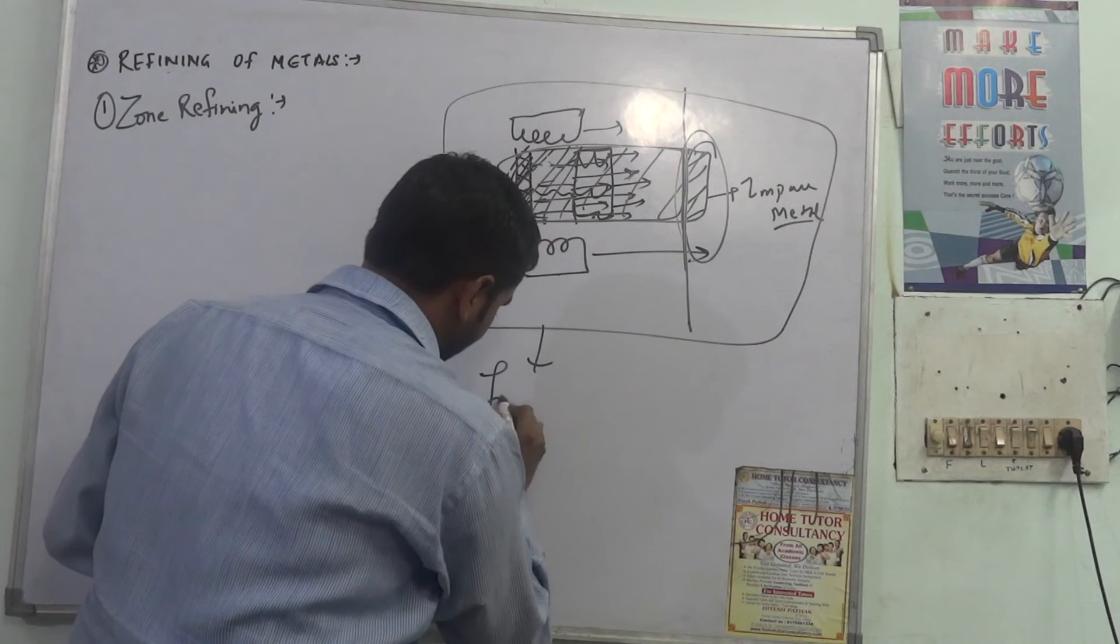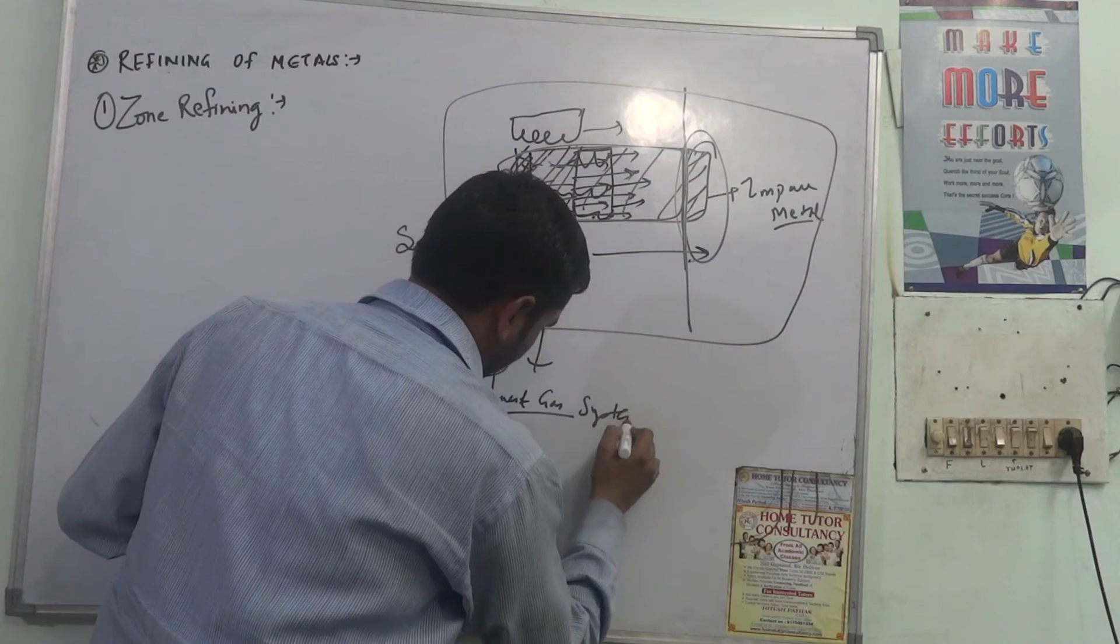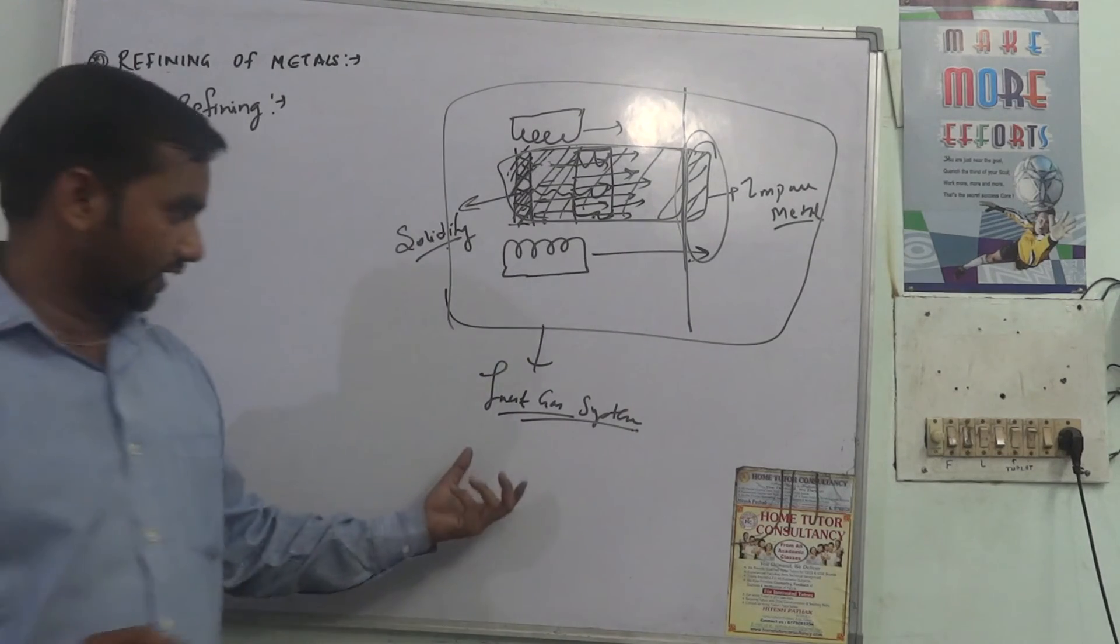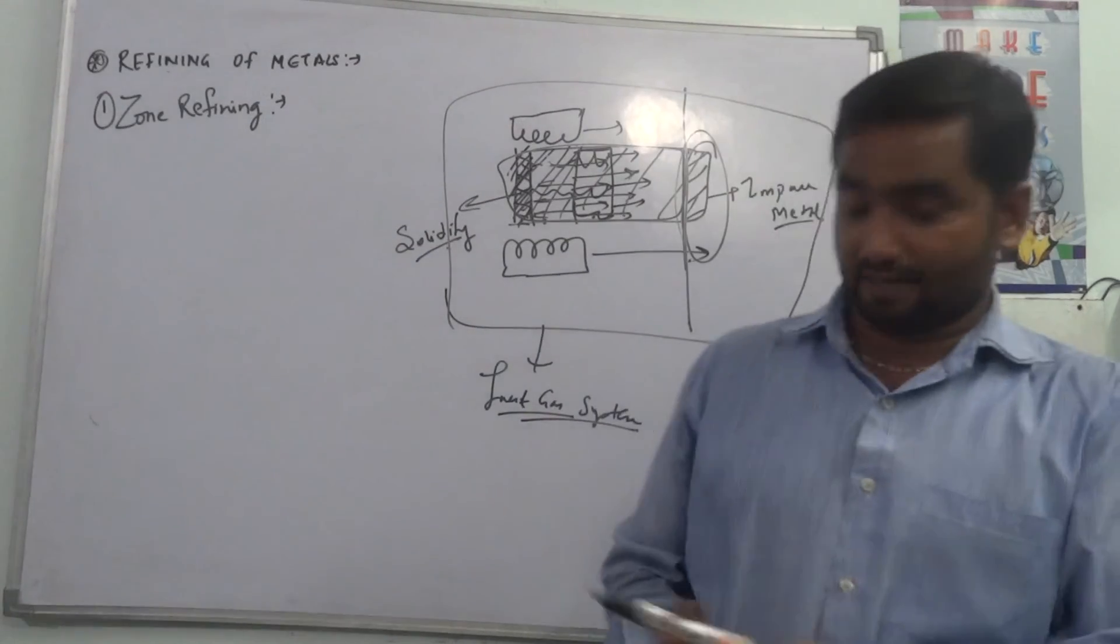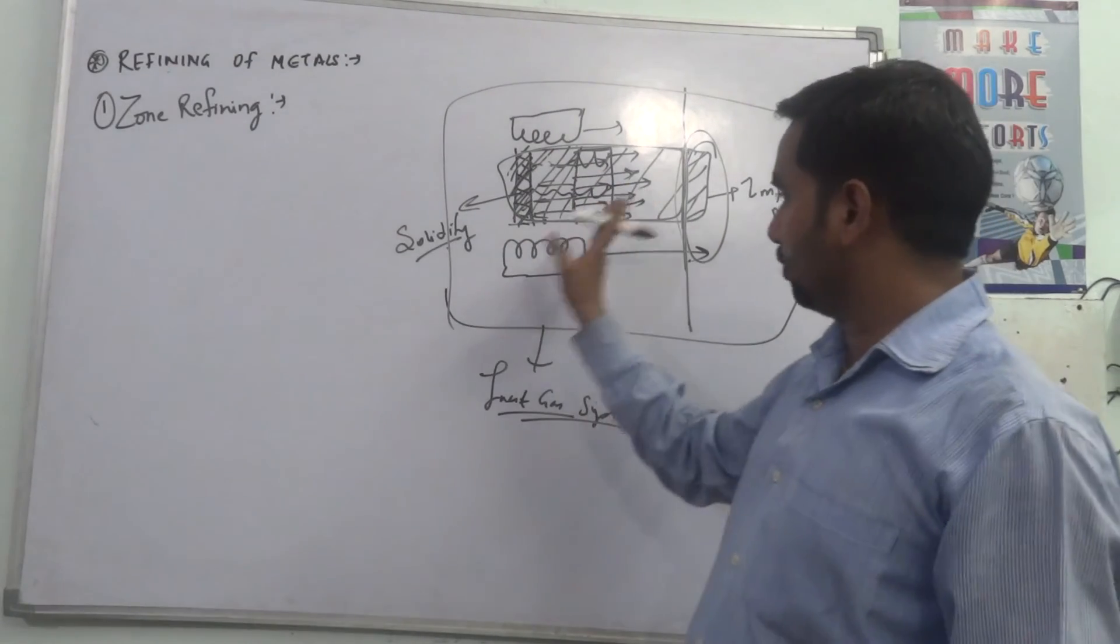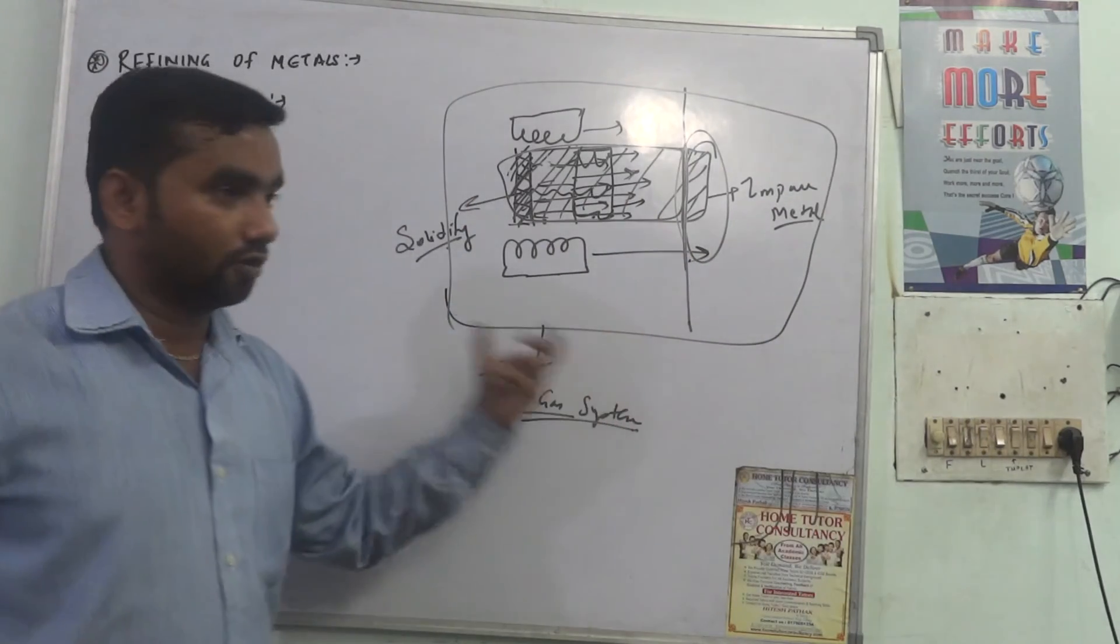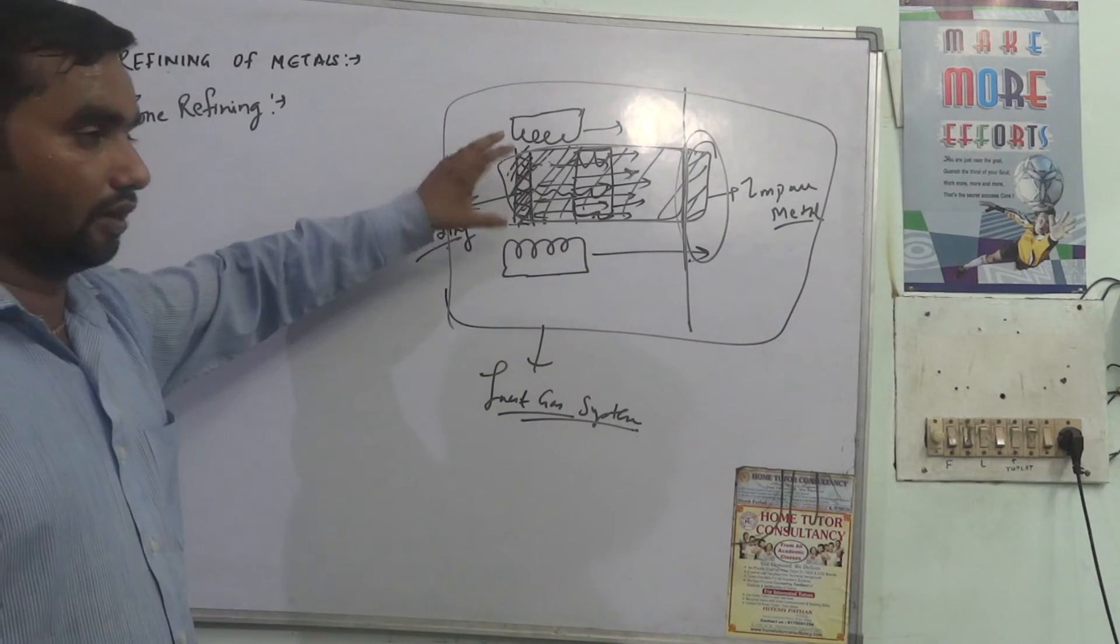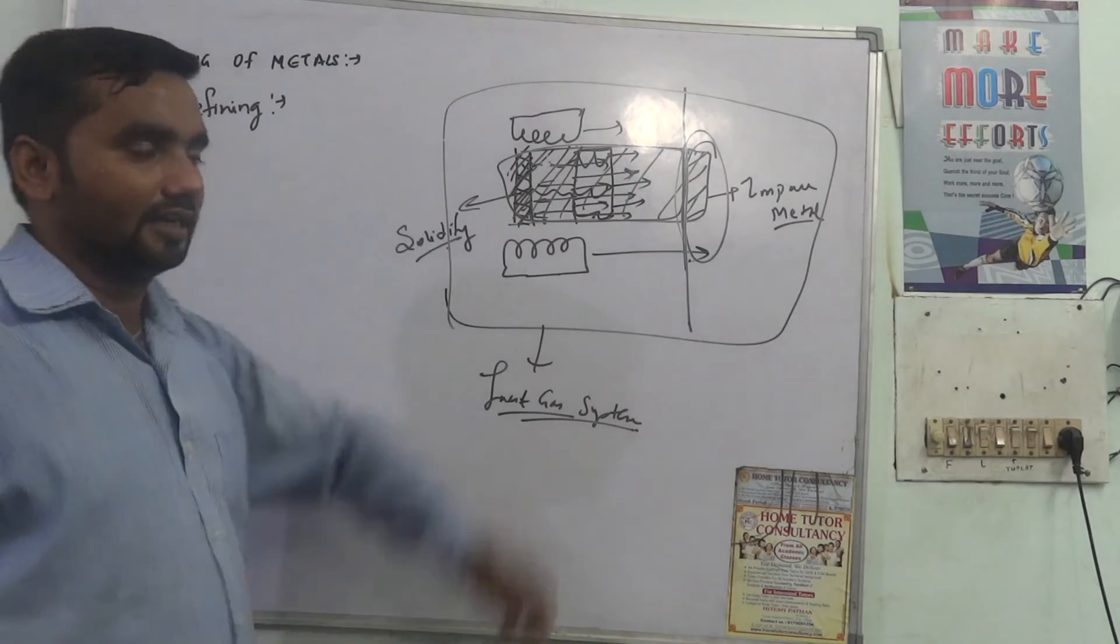This process is done in an inert gas system. Why? Because if there is atmosphere, the pure metal will form oxide. That is why zone refining is done in the absence of oxygen and air, and we can put inert gas through the surrounding so that no reaction can occur between pure metal and inert gas.